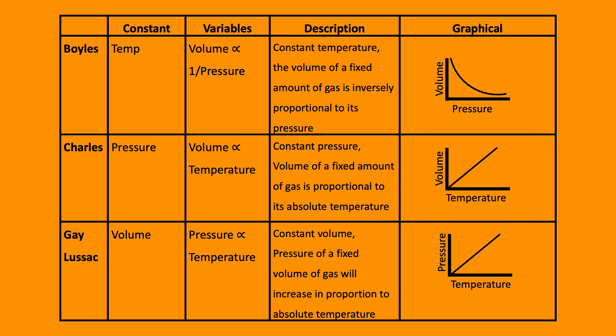The following two laws have linear relationships. Charles's law: at a constant pressure, the volume of a fixed amount of gas is proportional to its absolute temperature. So you increase the temperature, increase the volume. Gay-Lussac: at a constant volume, the pressure of a fixed volume of gas will increase in proportion to its absolute temperature. As the temperature increases, the pressure of the gas increases.